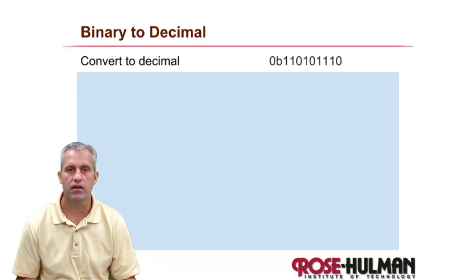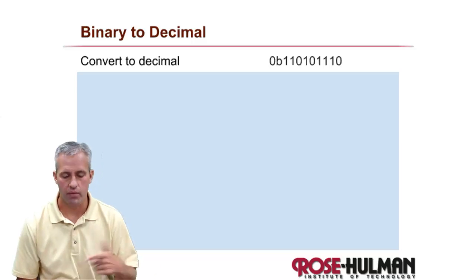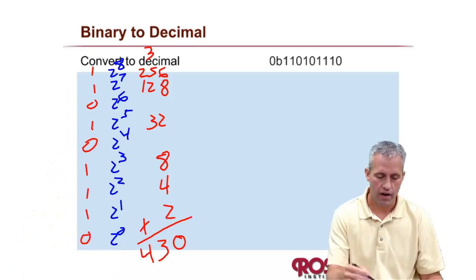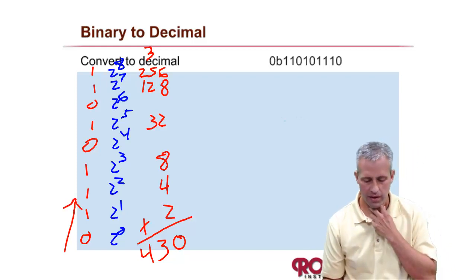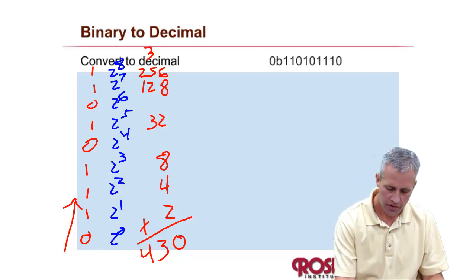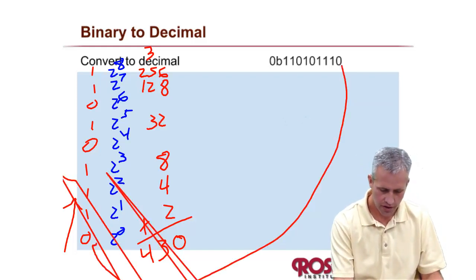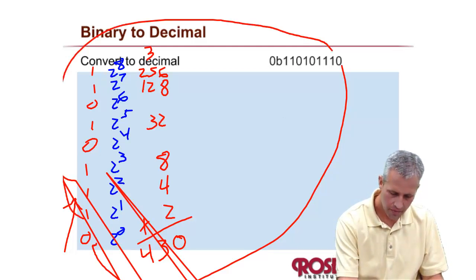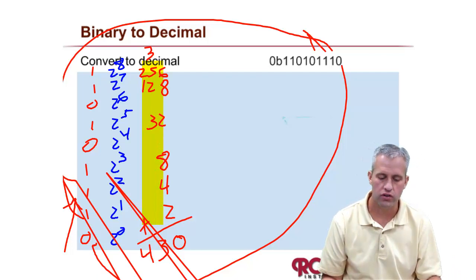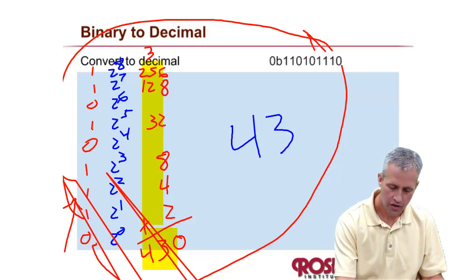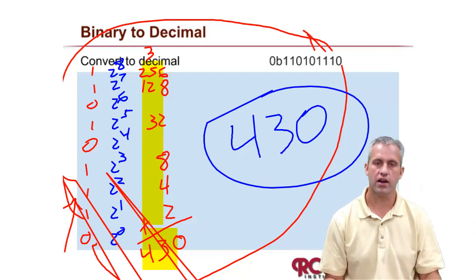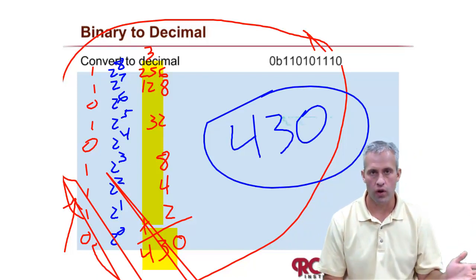Let's do a practice conversion from binary to decimal — take a minute and try it. Here's my work: I wrote the number out and identified which place values had a one — those were 2, 4, 8, 32, 128, and 256. Adding those together gives 430, which is the title for this course. So hopefully when you got that number you thought, 'I can do this.' That's conversion from binary to decimal.